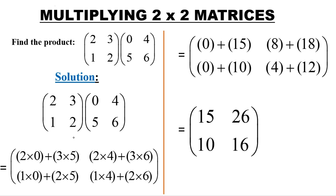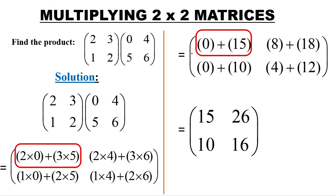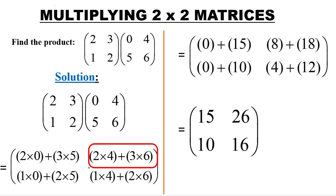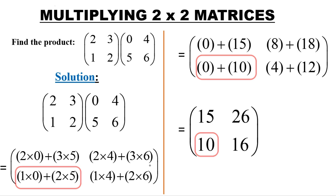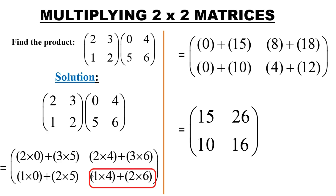Now let us compute this. For the first product: 2 by 0 plus 3 multiplied by 5 gives 0 plus 15, which equals 15. For the next element: 2 by 4 plus 3 by 6 gives 8 plus 18, which equals 26. Going to the second row: 1 by 0 plus 2 by 5 gives 0 plus 10, which equals 10. Then the last one: 1 by 4 plus 2 by 6 gives 4 plus 12, which equals 16. And that is how you multiply those two matrices.